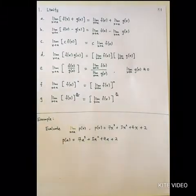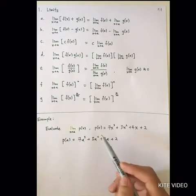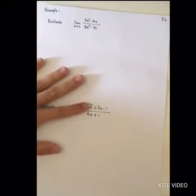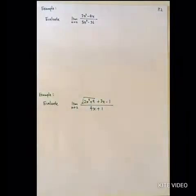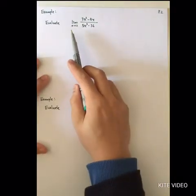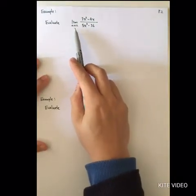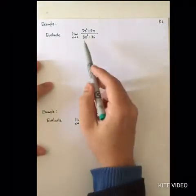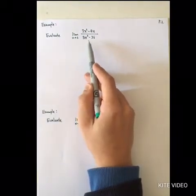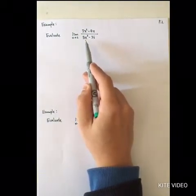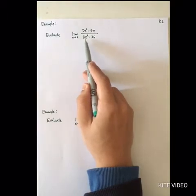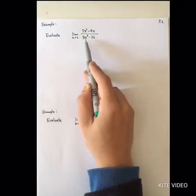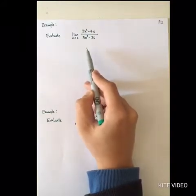Sometimes you won't be given that simple a result — you will be given some number and asked to calculate the exact value. For the first example, you are asked to evaluate the limit as x approaches 2. Before you apply direct substitution, first check whether the denominator approaches zero. If you substitute x equal to 2, the denominator becomes 40 minus 36, which equals 4 — not equal to zero.